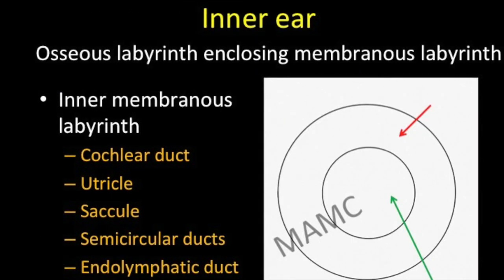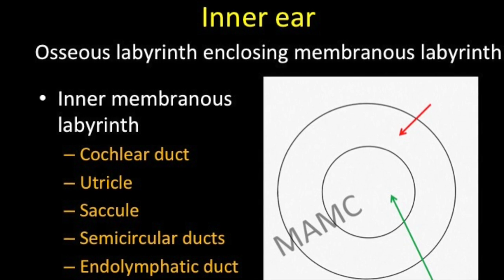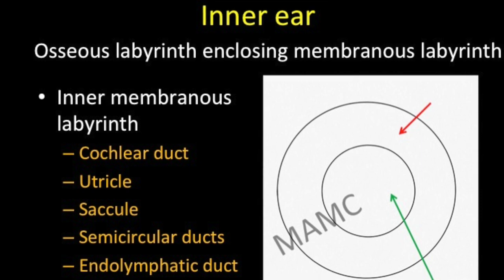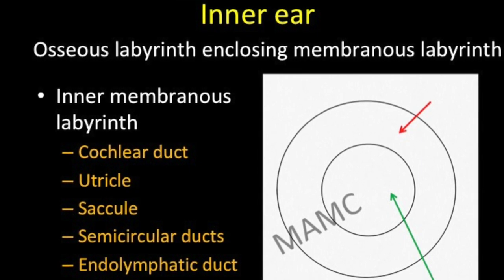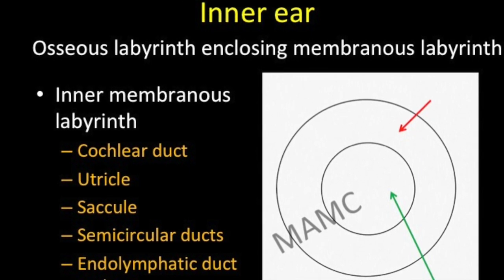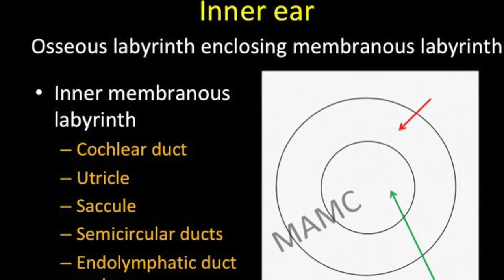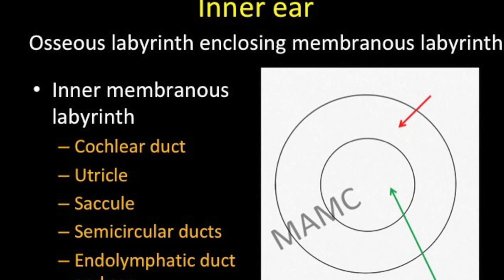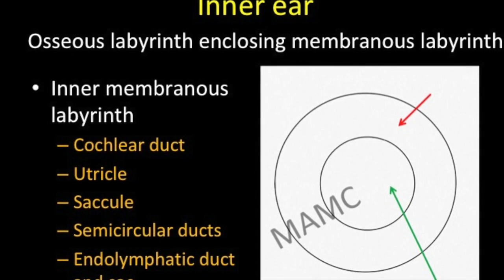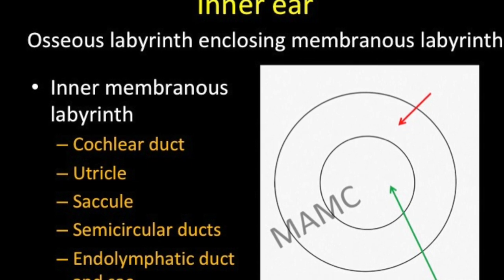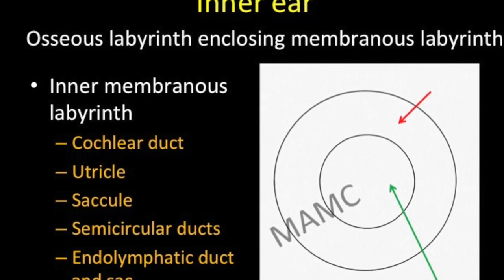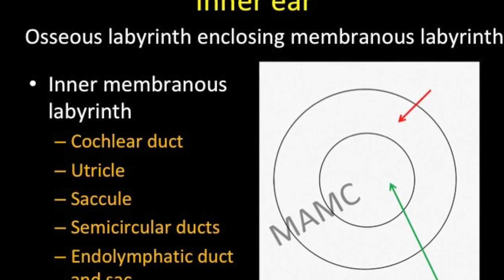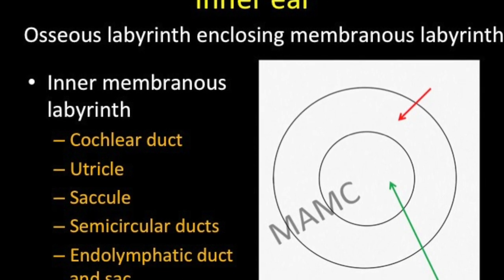Between the osseous labyrinth and the membranous labyrinth lies the perilymph. Imagine two concentric circles — the outer one represents the osseous labyrinth and the inner one is the membranous labyrinth. The space between the two, demarcated in red, represents perilymph fluid, and within the inner membranous labyrinth the green arrow depicts the endolymph.